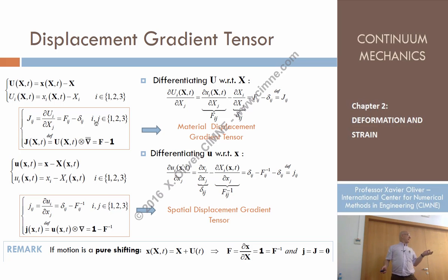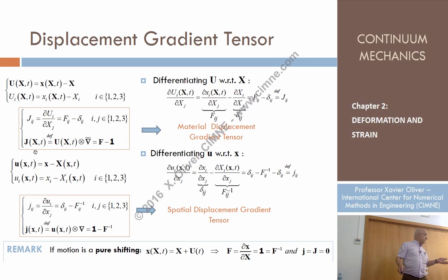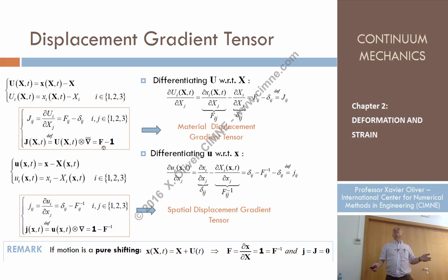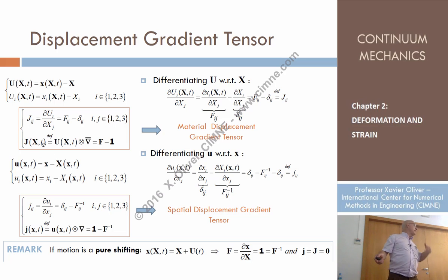Now this is the index expression. How do we pass to the compact expression? The component IJ of one tensor we call J is the gradient of the displacement tensor. F_ij is the component of tensor F, and delta_IJ is the component of the unity tensor. So we can say that J, defined as the material gradient derivative of the displacement, is equal to F minus I. So there is nothing new here — if we have F, we can compute capital J just by subtracting the identity.